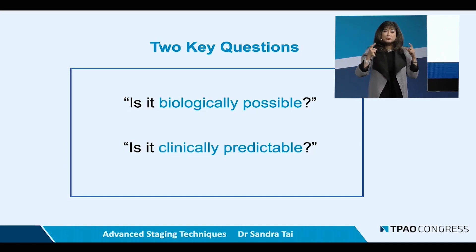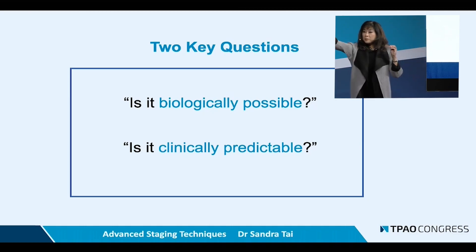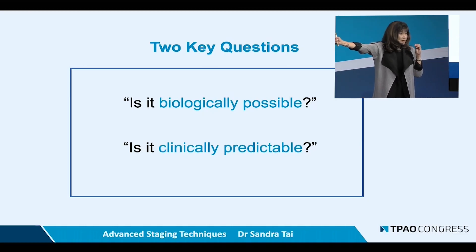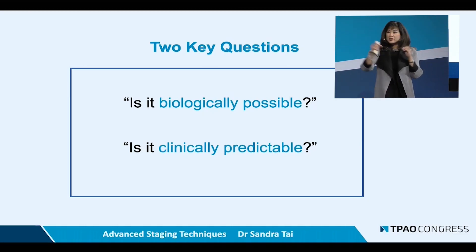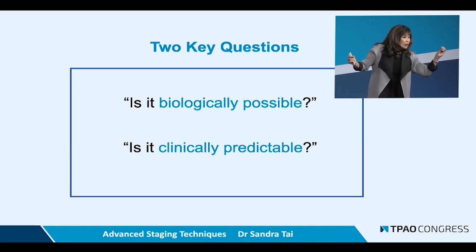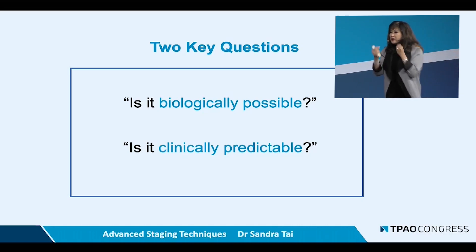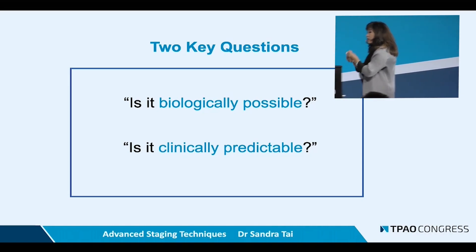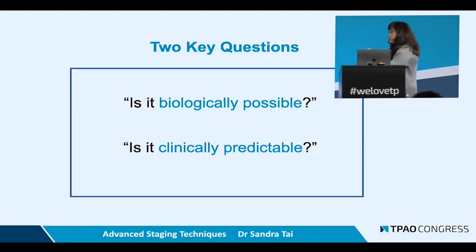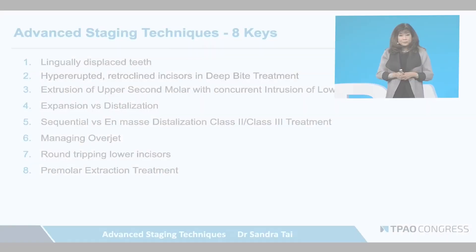The two questions we're really asking ourselves are: is this biologically possible? Can I really proclaim my teeth 9 millimeters? And if I could, is this clinically predictable? Can I really intrude those lower incisors by 6 millimeters, as the software told me?